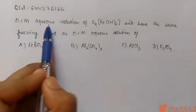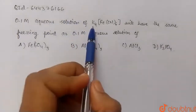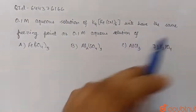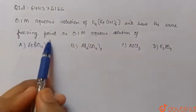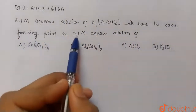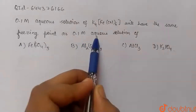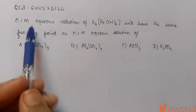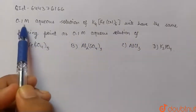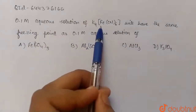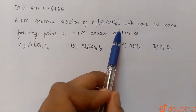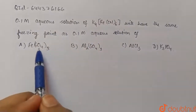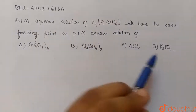Today's question is: a 0.1 molar aqueous solution of K₄[Fe(CN)₆] will have the same freezing point as a 0.1 molar aqueous solution of which compound? We need to find which solution has the same freezing point as 0.1 M K₄[Fe(CN)₆].